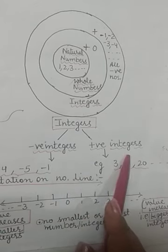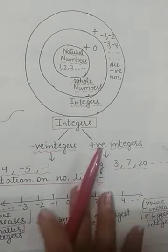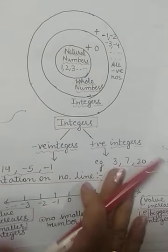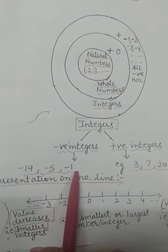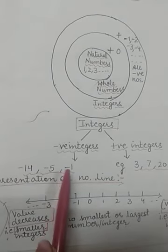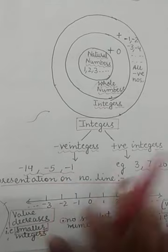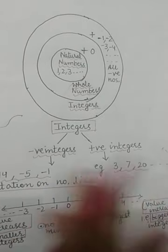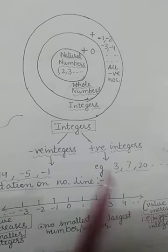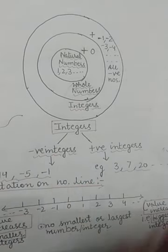Integers can be further divided into two categories: positive integers and negative integers. Positive integers means all the positive numbers. For negative integers, any number with a minus sign in front of it is a negative integer. Children, you have to write down all these points in your register before we start the first exercise.